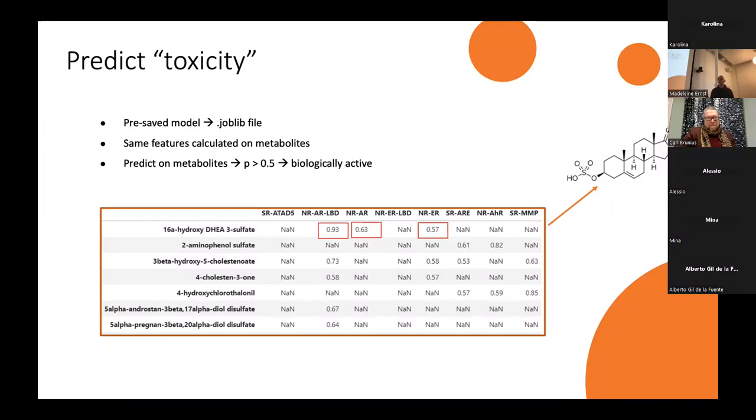If this molecule is blocking this enzyme, for example, then we call it toxic. I have excluded all the situations where I had a probability of less than 0.5, meaning they're not considered being toxic against a certain target. For example, for the 16A-hydroxy DHEA through sulfate, it's active against three targets. All of these targets are androgenic or estrogenic receptors. And this is a standard trick for me because this is a very steroid-like structure. I would expect that the steroid-like structure is active against estrogenic receptors. So the model does make sense to an extent.